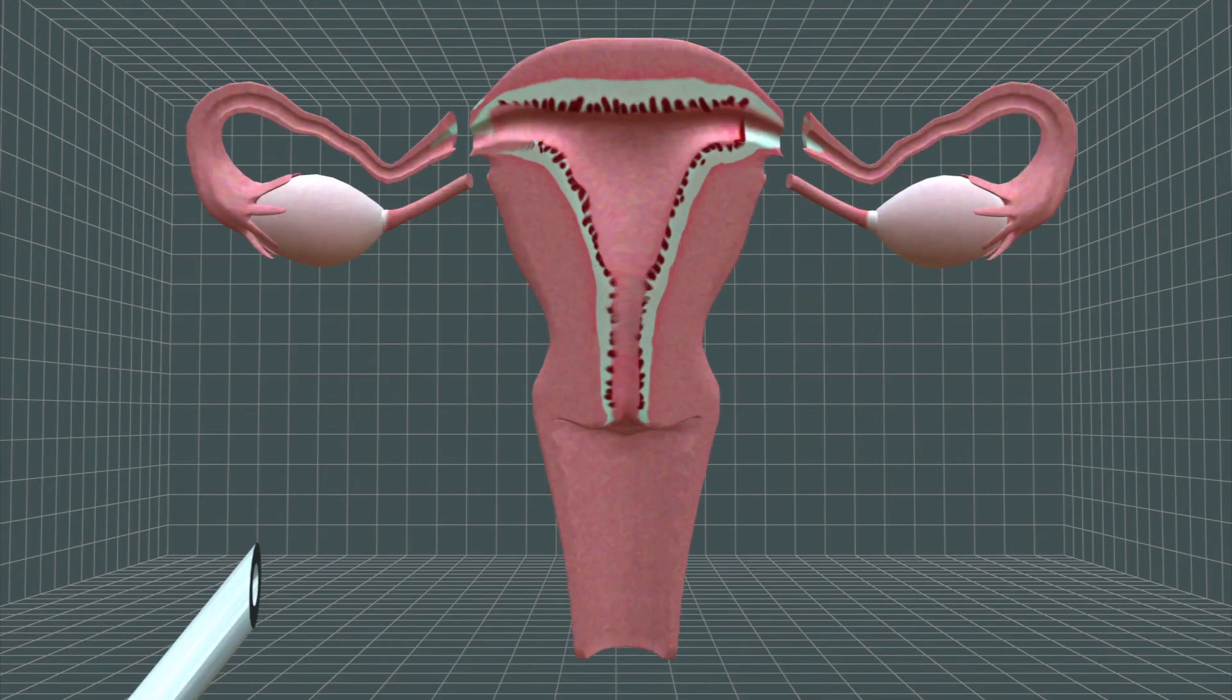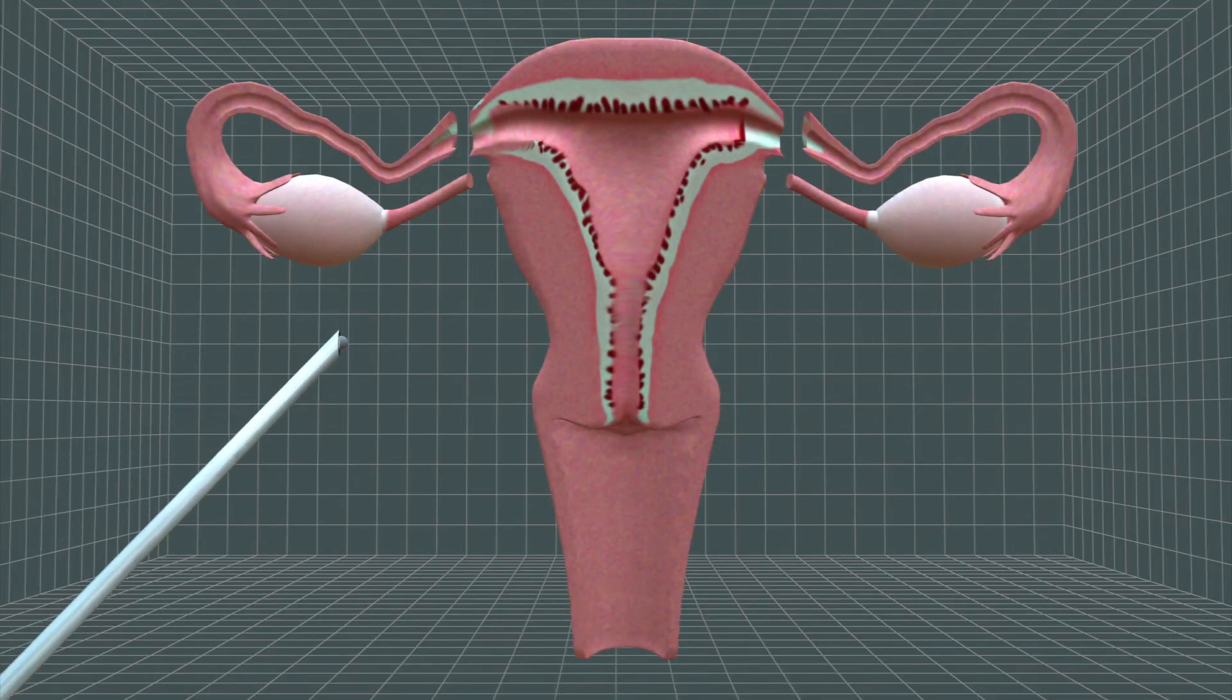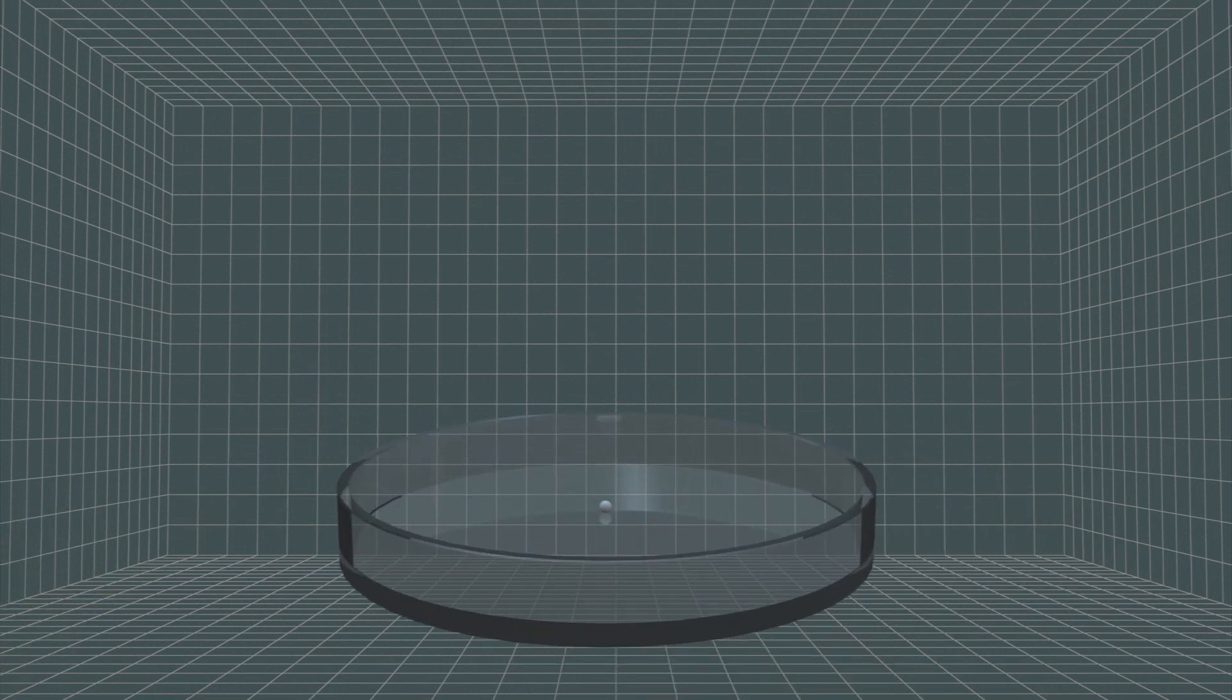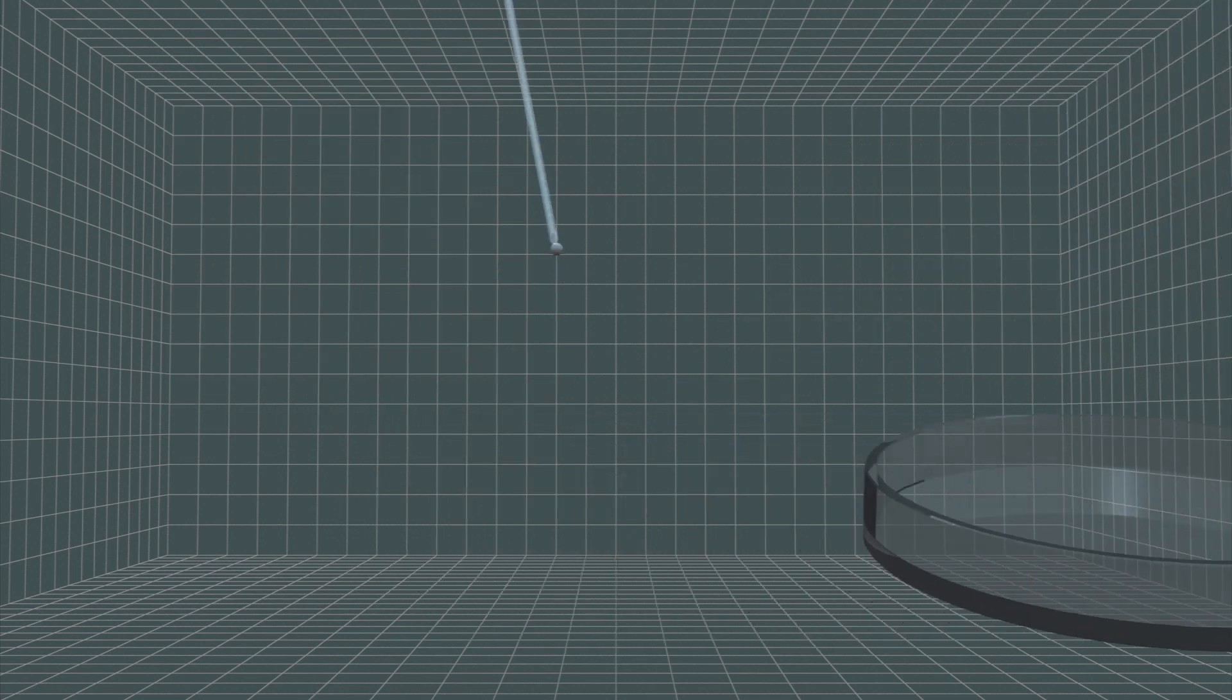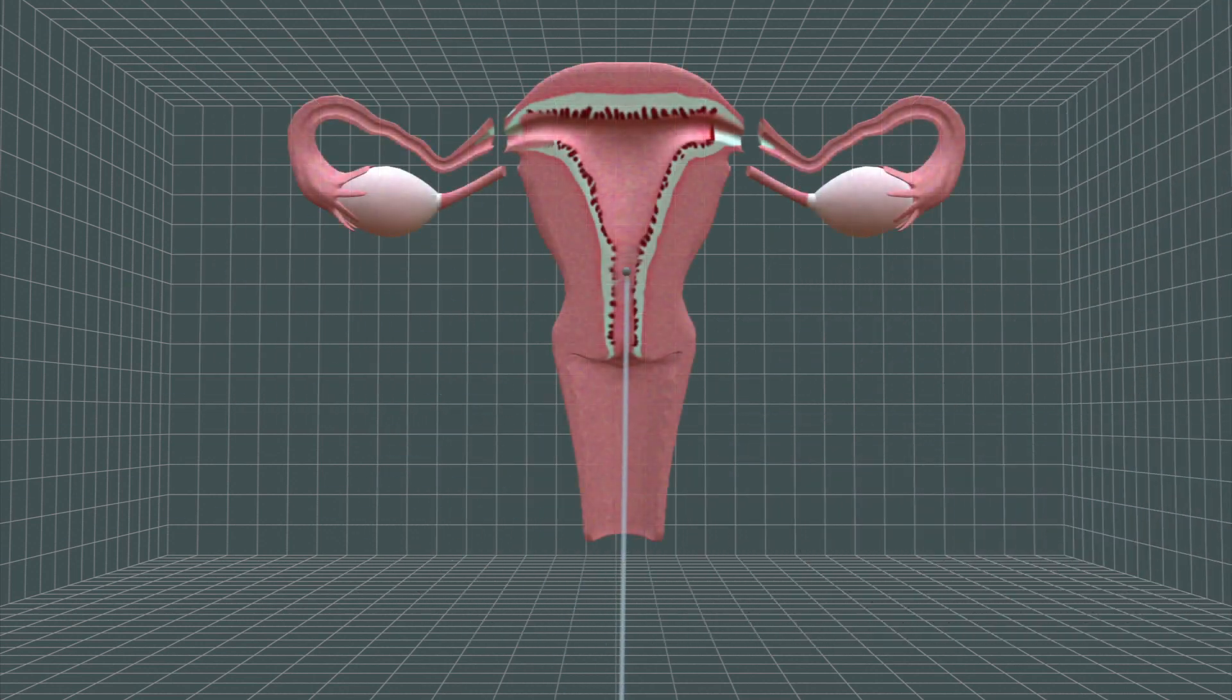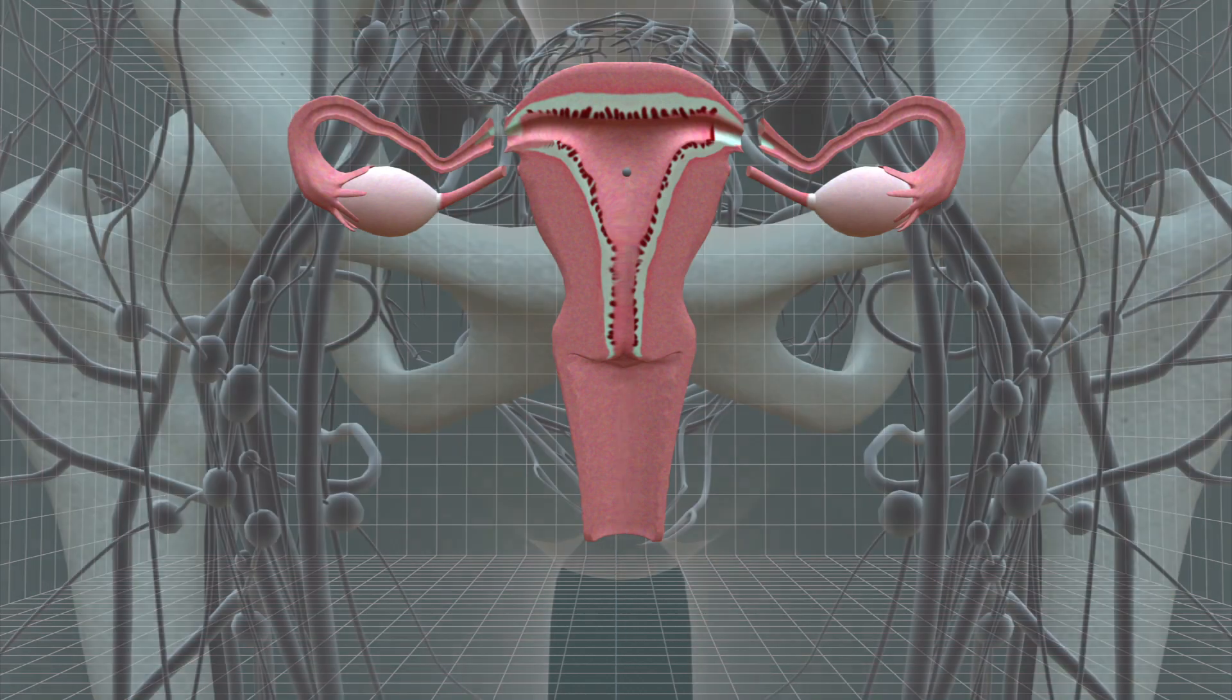Since the transplanted womb is not connected to the recipient's fallopian tubes through which eggs are released, natural fertilization cannot occur in the uterus. Instead, mature eggs will be extracted from the recipient and implanted to the uterus after performing in vitro fertilization.